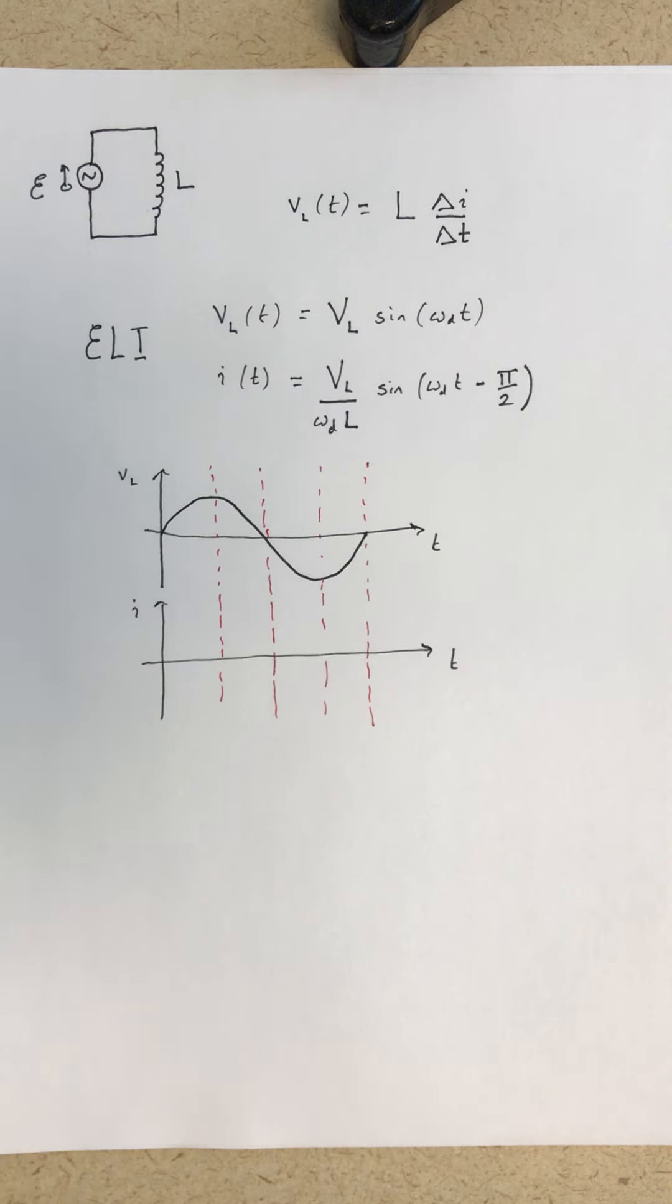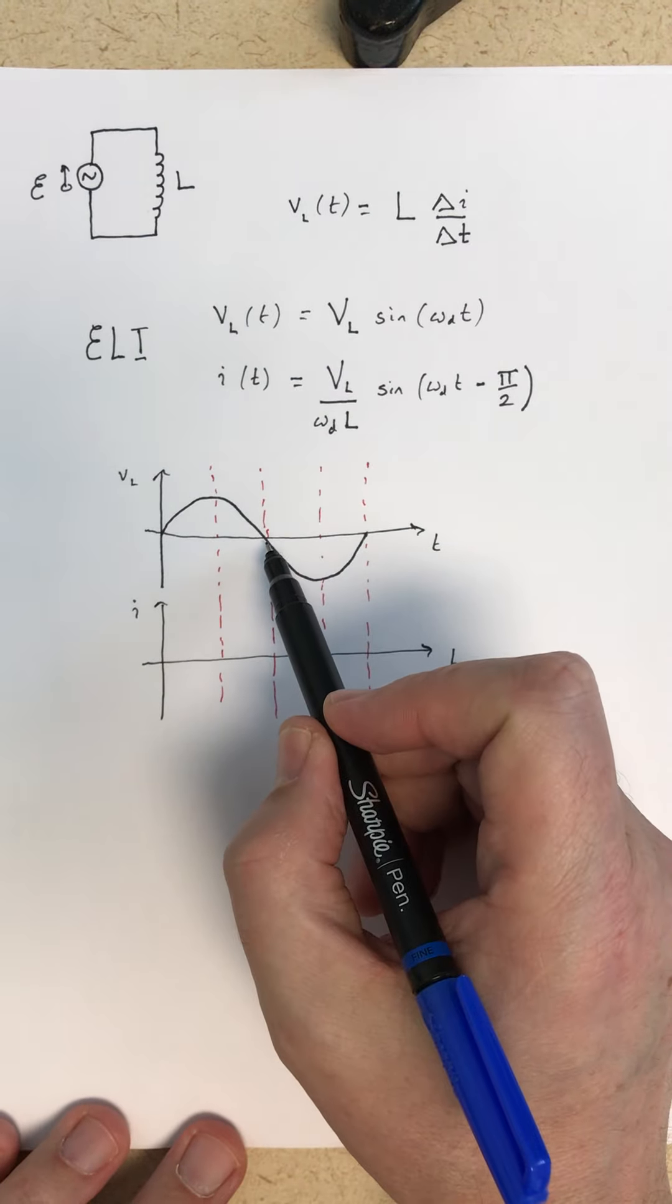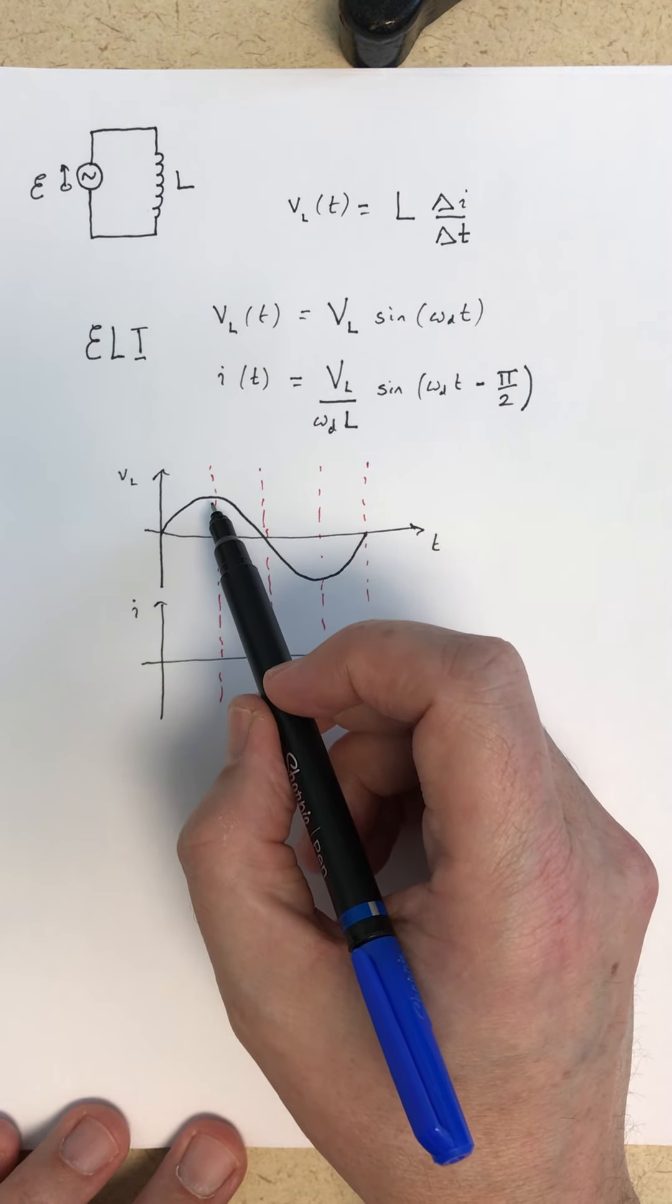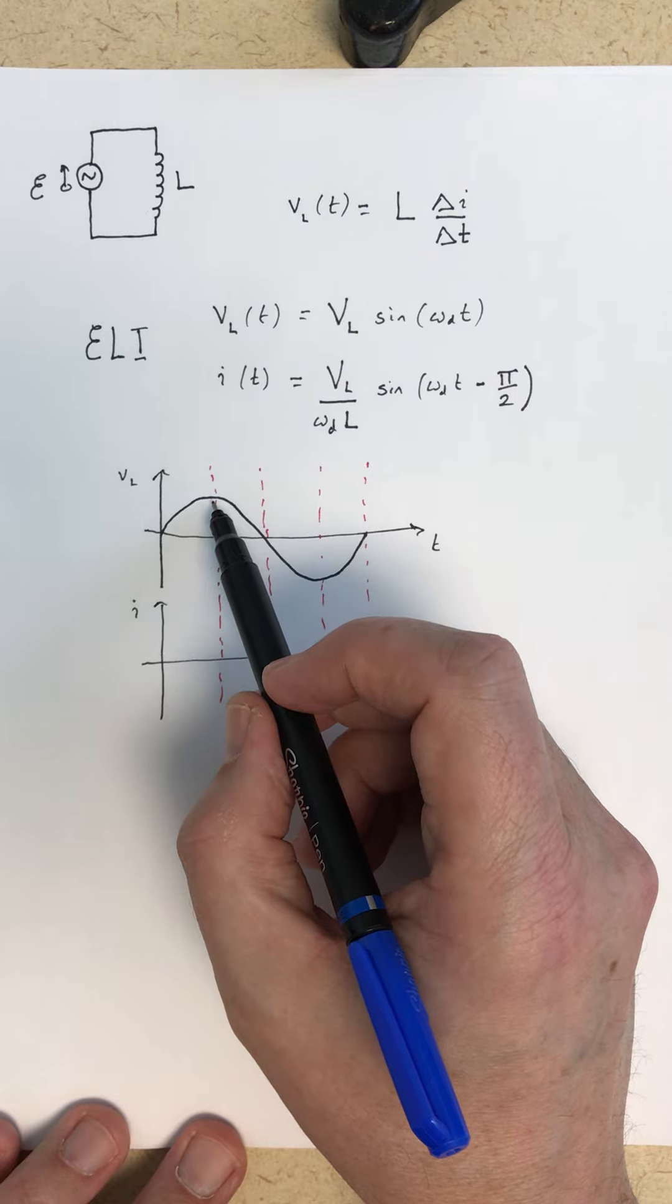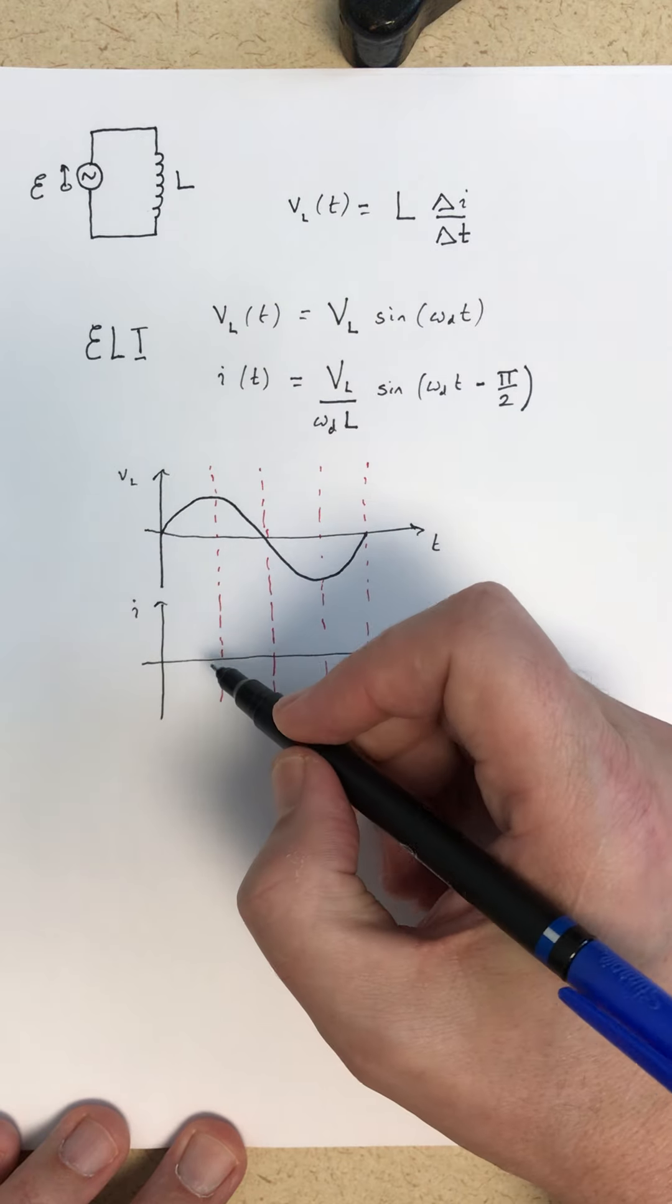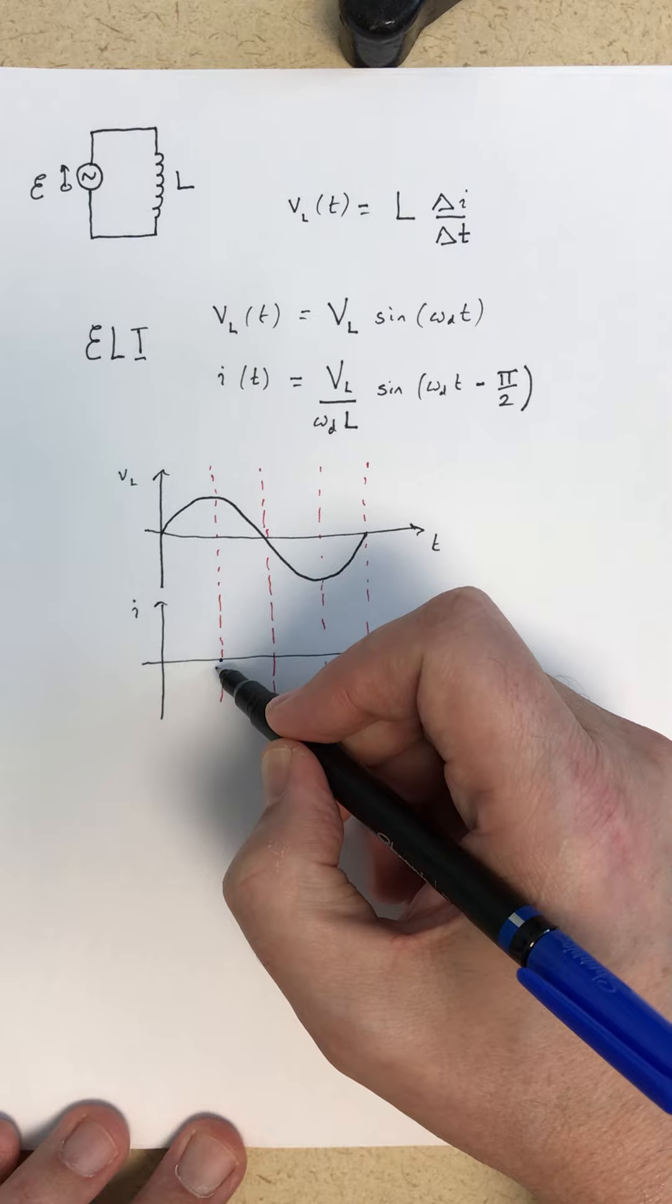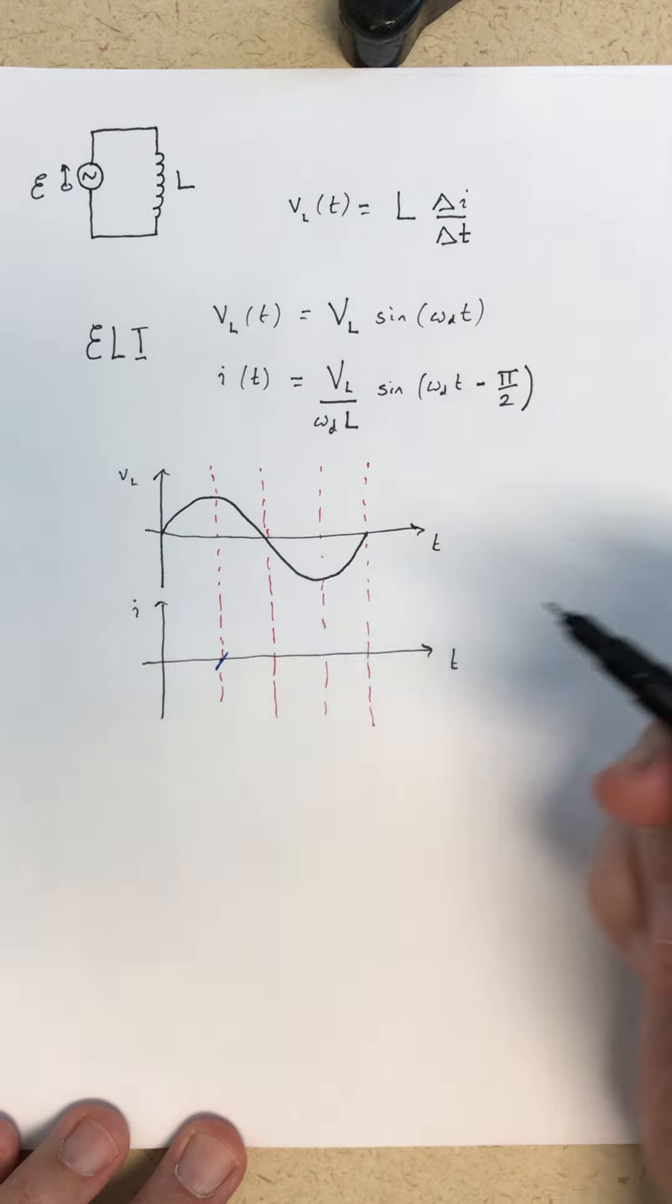When the voltage is maximum is when you're going to have the greatest slope for the current, and a positive slope. So this has to correspond to, on a sine wave, when it's passing through zero. To indicate the slope there...